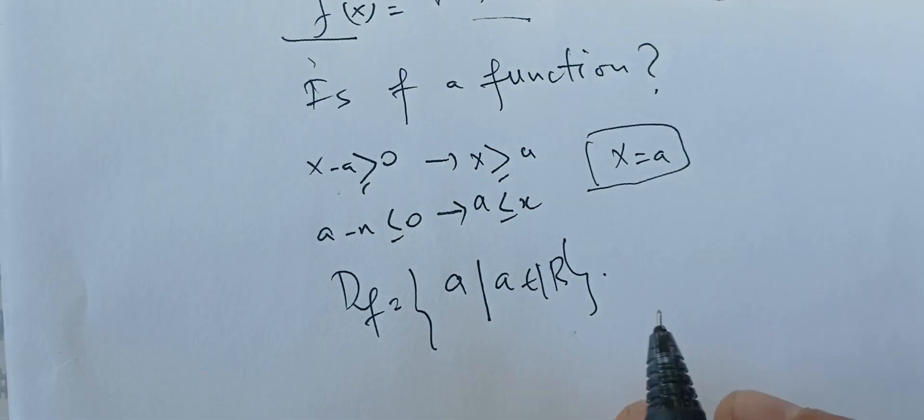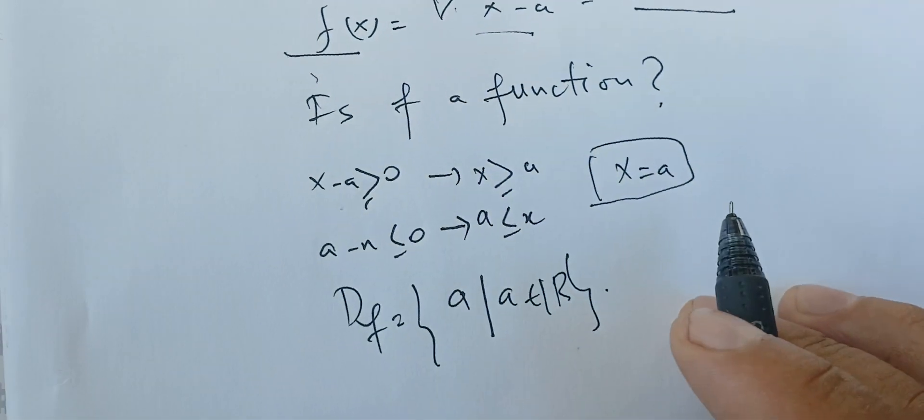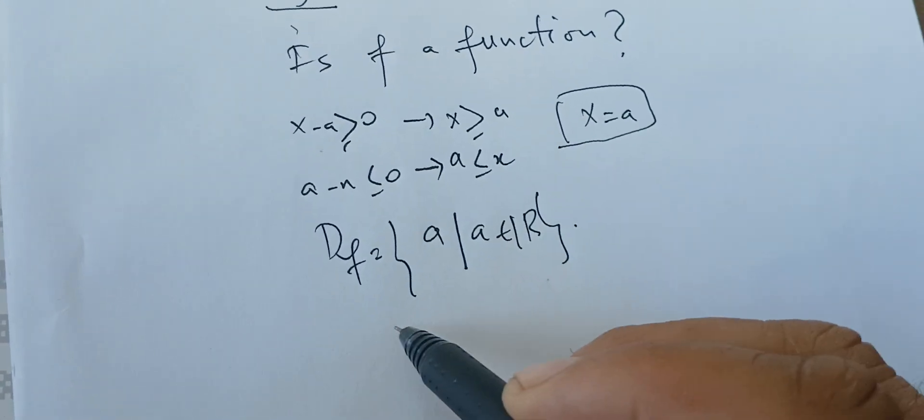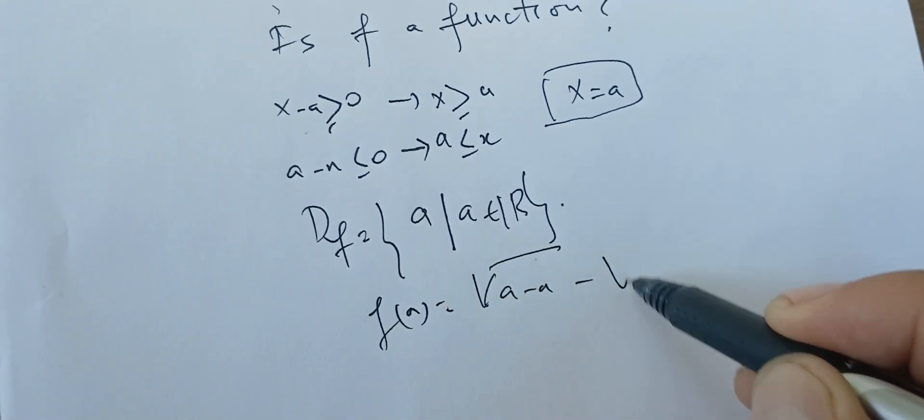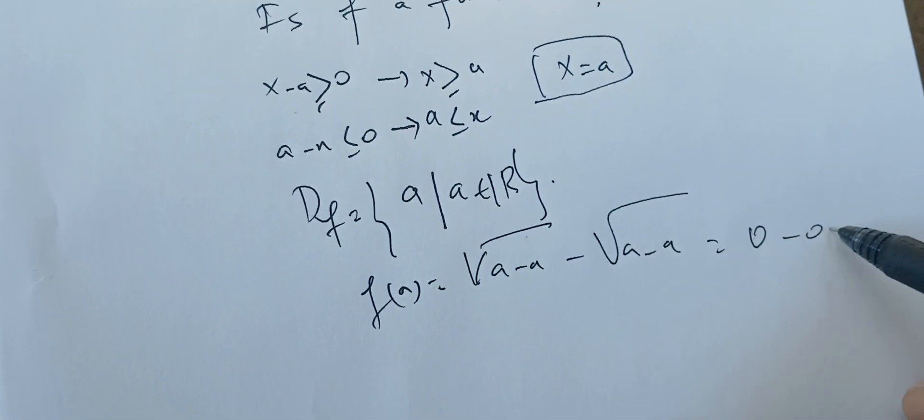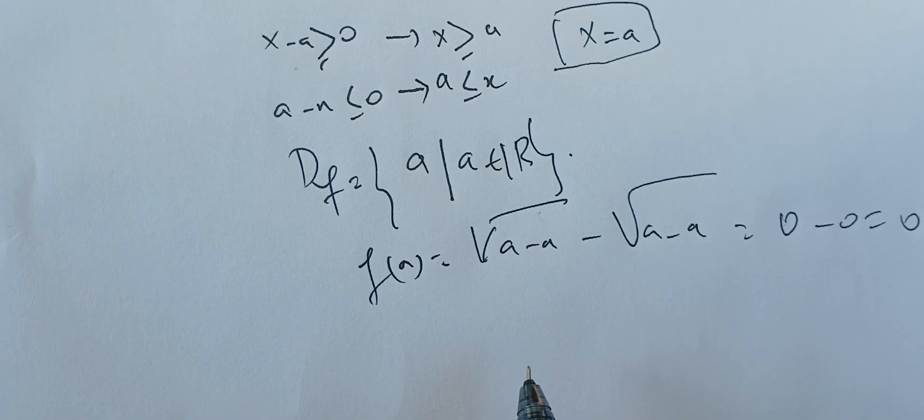If I can find the image, if I assume that I can, that means f(a) is going to be the square root of a minus a minus the square root of a minus a, which is 0 minus 0, which is 0.